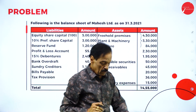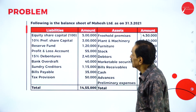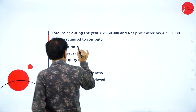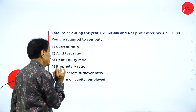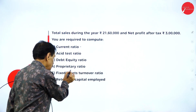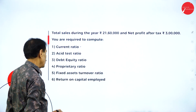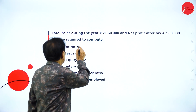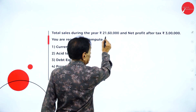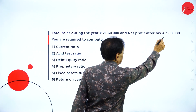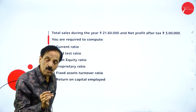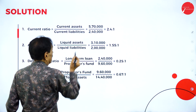You are required to compute: current ratio, acid test ratio, debt equity ratio, proprietary ratio, fixed asset turnover ratio, and return on capital employed. Total sales during the year are 21 lakh 68,000 and net profit after taxation is also given. For the current ratio, the formula is current asset divided by current liability.